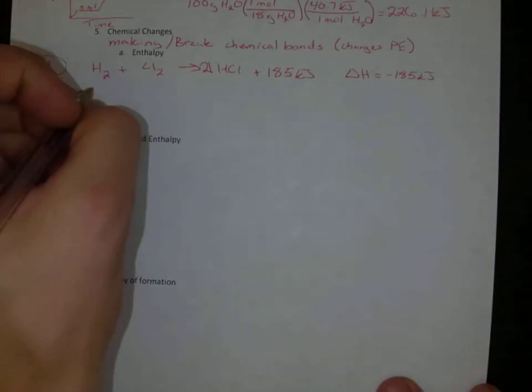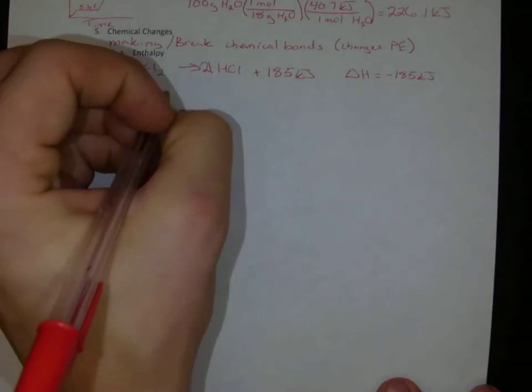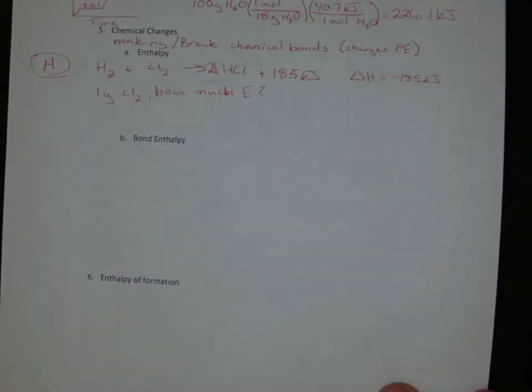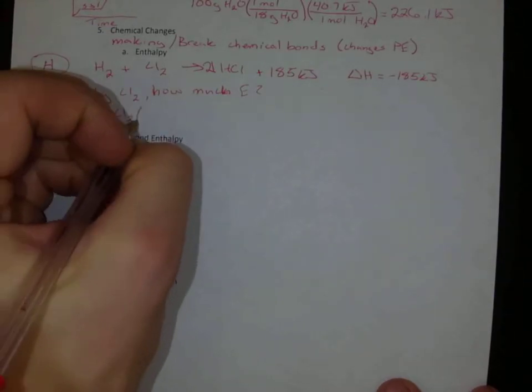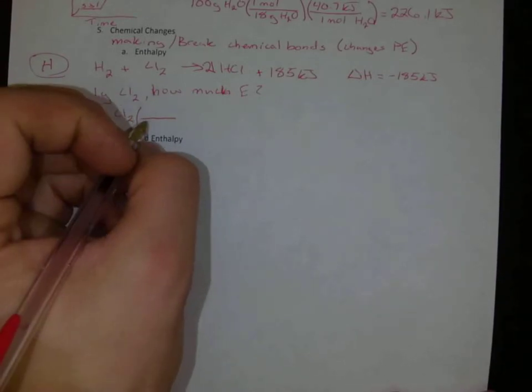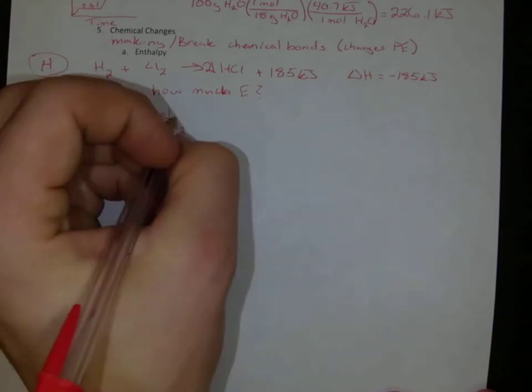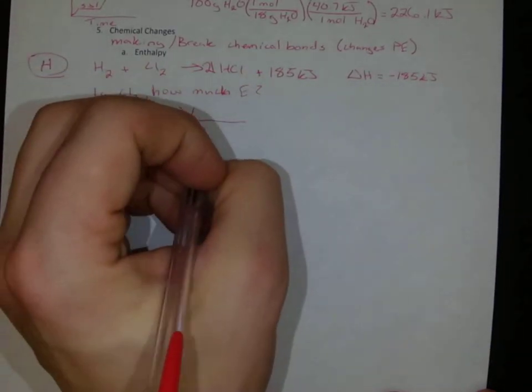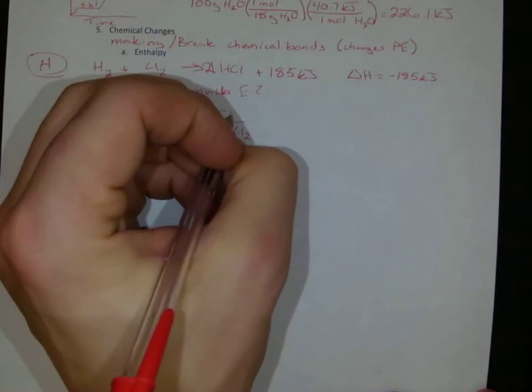So if I have one gram of Cl2, how much energy can I get out? Well, I can just do a stoichiometry chain again. So one gram of Cl2, I can put my molar mass on here, so Cl2, it's 35.45, so that's going to be 71 grams of Cl2 to one mole of Cl2, and in my reaction, I have one mole of Cl2 that produces 185 kilojoules.